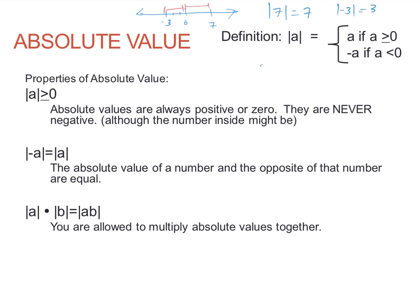Here's another way to think about it — a two-part definition. The absolute value of a number is just that number if it's already positive; for example, the absolute value of seven is just seven. But if you take the absolute value of a negative number, one way to make it positive is to add another negative — think of it as the opposite of a. So the absolute value of a is the opposite of a if that number is less than zero.